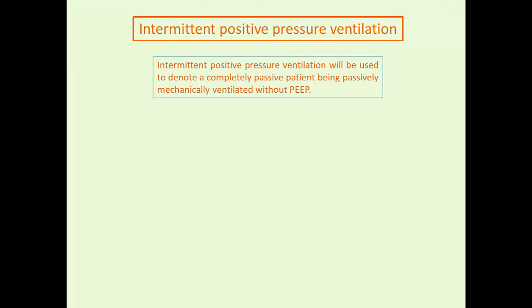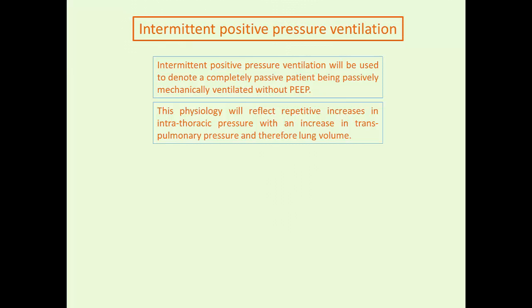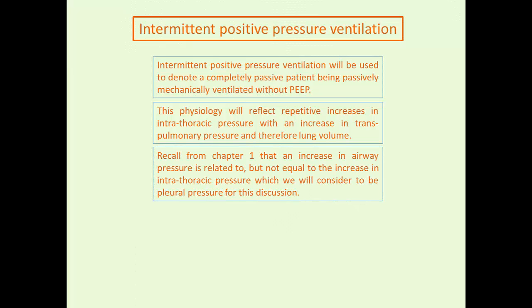Intermittent positive pressure ventilation here denotes a completely passive patient being passively mechanically ventilated without PEEP. This physiology will reflect repetitive increases in intrathoracic pressure with an increase in transpulmonary pressure and therefore lung volume. Recall from Chapter 1 that an increase in airway pressure is related to but not equal to the increase in intrathoracic pressure, which we will consider to be pleural pressure for this discussion.